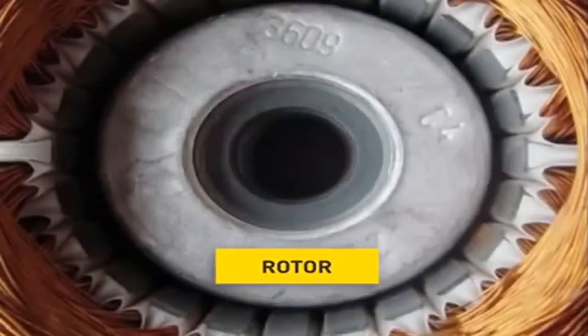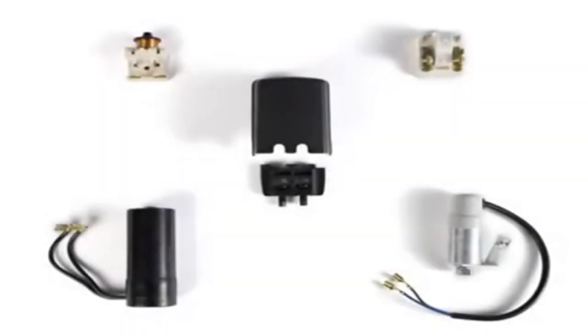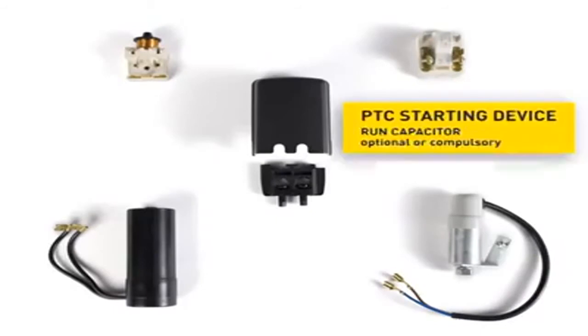The Rotor is an iron core cast in aluminium. A suitable starting unit is installed depending on the compressor type and later application. Here a PTC starting unit is shown on the right and a starting relay on the left.